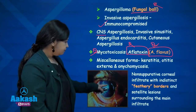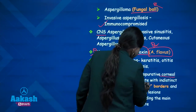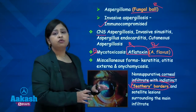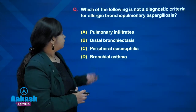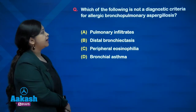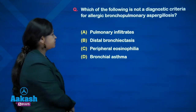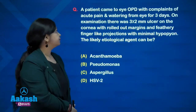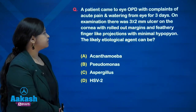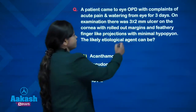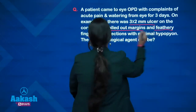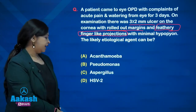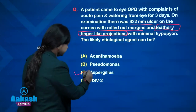In fungal keratitis, the clinching point in the question is corneal infiltrate with indistinct feathery borders — whenever feathery borders are mentioned, think of a fungal cause of keratitis. The NEET question asks: which of the following is not a diagnostic criterion for ABPA? The answer is distal bronchiectasis, because in ABPA there is central bronchiectasis. For the keratitis question from IOPD: a patient with an ulcer on the cornea with rolled-out margins, feathery finger-like projections, and minimal hypopyon — the likely etiological agent is Aspergillus.